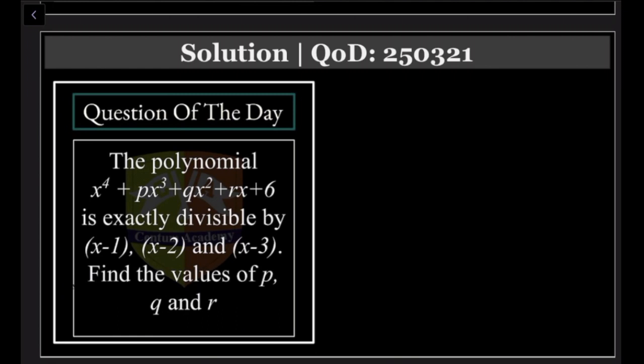Actually, you will get three equations. You know, right? If you put x equal to 1, you will get the expression equal to 0 by factor theorem or remainder theorem. Which one? Comment, okay sure.